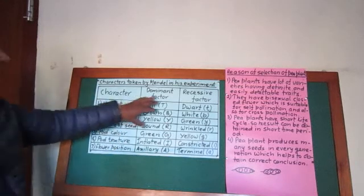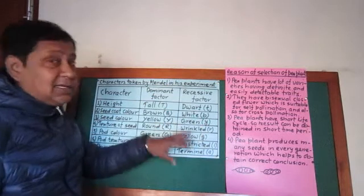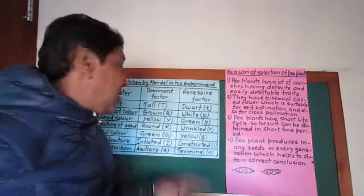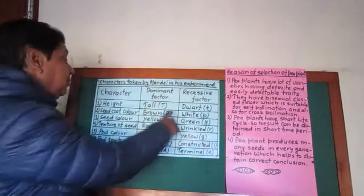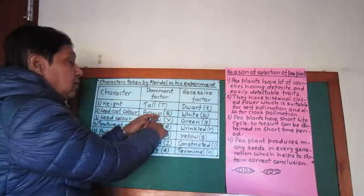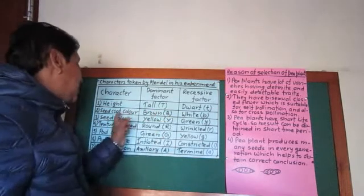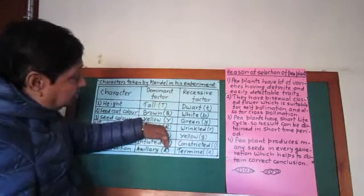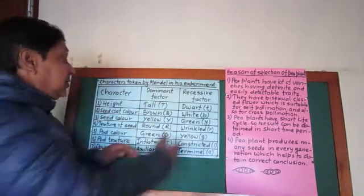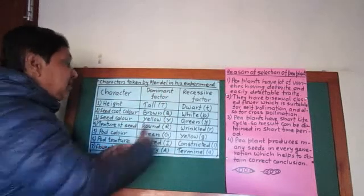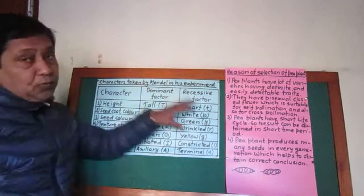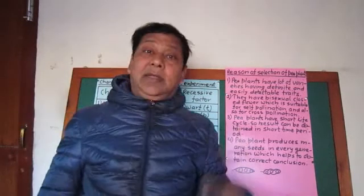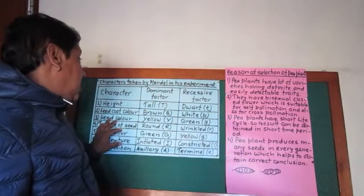He found that some of the characters are dominant and some are recessive. When tall and dwarf pea plants are crossed, all the plants in the first generation appear tall — this is called dominant. Similarly, when brown seed coat colored pea plant is crossed with white seed coat colored pea plant, all plants in the first generation are found to be brown. Every character has at least two factors, also called determiners, and he selected these characters in his experiment.